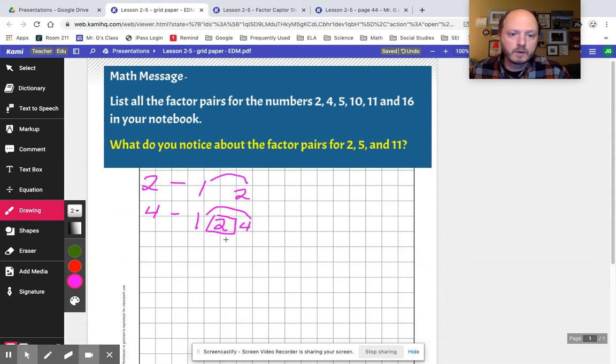And I like to put a little square around those numbers that are square numbers. We'll talk about prime numbers in a moment. Don't worry about that. So, how about number 5? We have 1 and 5, okay? And how about 10? We have 1 and 10. We also have 2 and 5. And 11. 1 and 11.